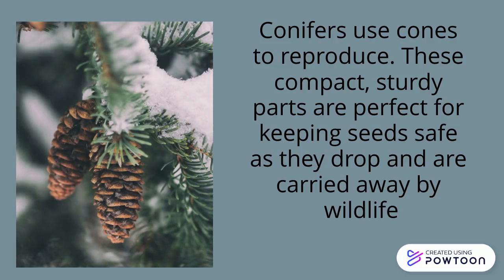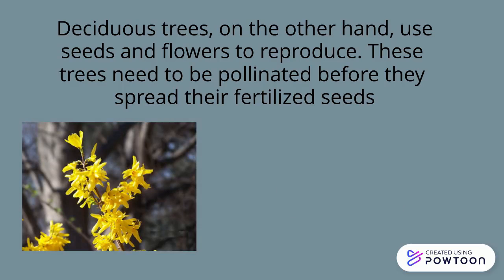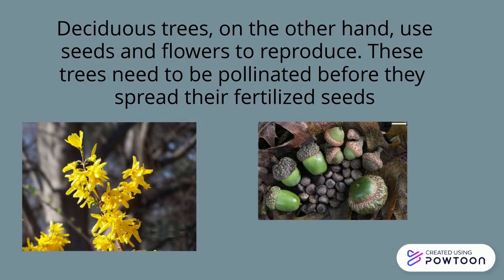Conifers use cones to reproduce. These compact, sturdy parts are perfect for keeping seeds safe as they drop and are carried away by wildlife. Deciduous trees, on the other hand, use seeds and flowers to reproduce. These trees need to be pollinated before they spread their fertilized seeds.